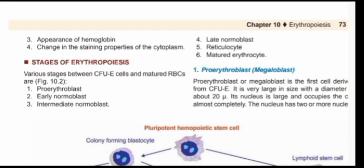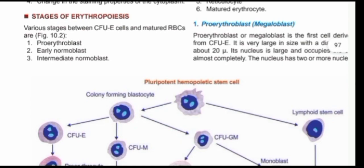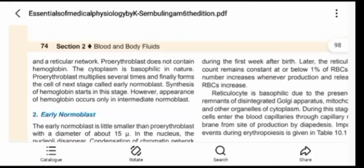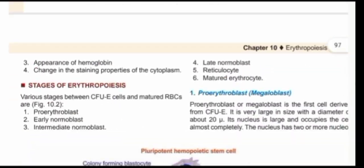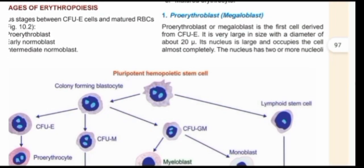What are the stages of erythropoiesis? You have six stages: the pro-erythroblast, the early normoblast, the intermediate normoblast, the late normoblast, the reticulocyte, and the mature erythrocyte. As you move down these stages, the diameters and other parameters decrease, including size. The peculiar characteristic of the pro-erythroblast — also called the megaloblast — is that it is the first cell derived from the colony-forming unit erythrocyte. It is very large, the nucleus is large and occupies the cell almost completely, and it does not contain hemoglobin. The cell is basophilic in nature.